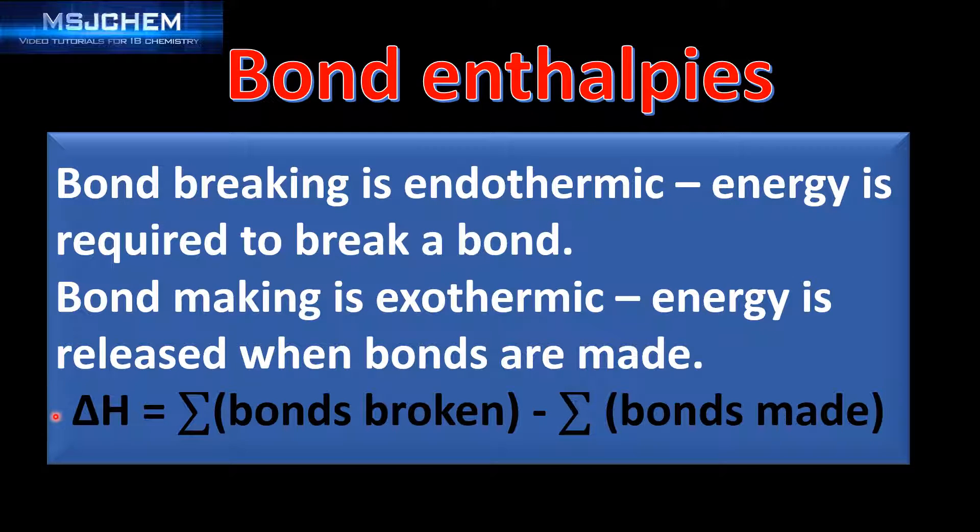To calculate the enthalpy change for a reaction using average bond enthalpies we can use this equation. The change in enthalpy equals the sum of the bonds broken minus the sum of the bonds made.